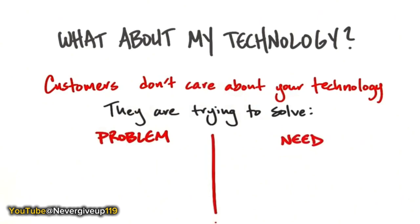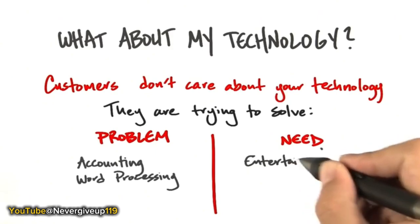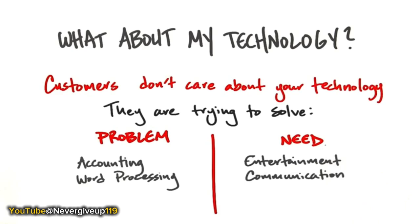Customers are trying to solve a problem or fulfill a need. The difference between a problem and a need: a problem is something like an accounting problem or wanting a word processor. But there are other things human beings do — like wanting to be entertained, wanting to have a date, or wanting to communicate with friends like on Facebook or Twitter. Those are needs. Needs are different than problems. And if you can find products that solve needs, your total available market is huge compared to solving specific problems.